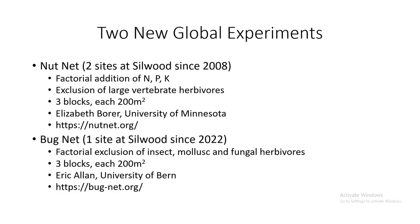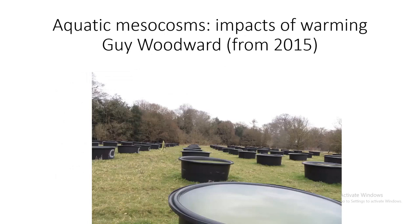The other project is called BugNet — a factorial exclusion of insects, mollusks and fungal herbivores, with roughly the same size and three replicates each of 200 square meters. That's run out of the University of Bern by Eric Allen. The other big new experiment at Silwood is the aquatic mesocosms from Guy Woodward's work on the impacts of warming on freshwater ecosystems.